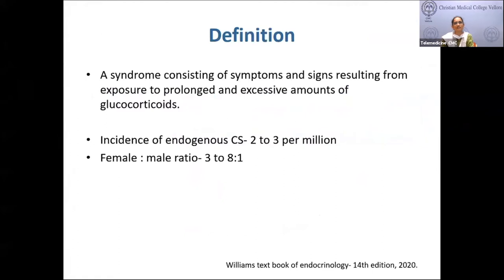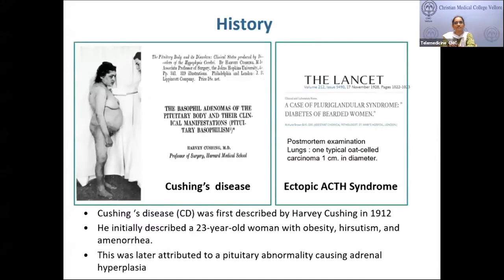Cushing syndrome consists of a group of symptoms and signs resulting from prolonged excessive exposure to glucocorticoids. The incidence of endogenous Cushing syndrome is about two to three per million with a female preponderance. It was first described by Harvey Cushing in 1912 in a 23-year-old lady presenting with obesity, hirsutism, and amenorrhea, later attributed to a pituitary abnormality causing adrenal hyperplasia. Ectopic ACTH syndrome was described after 1928.